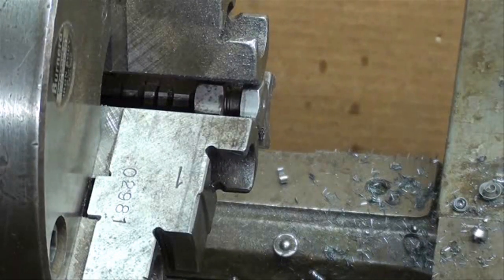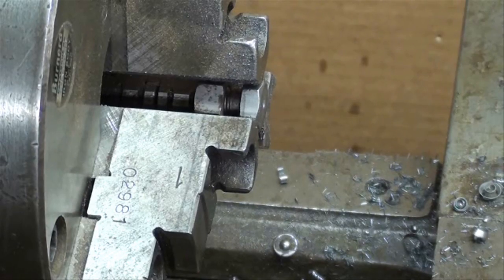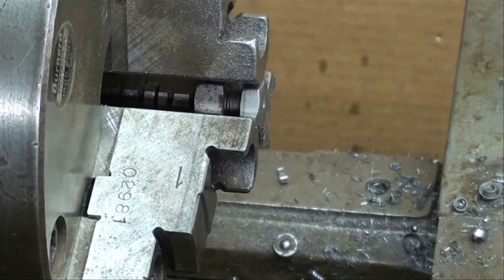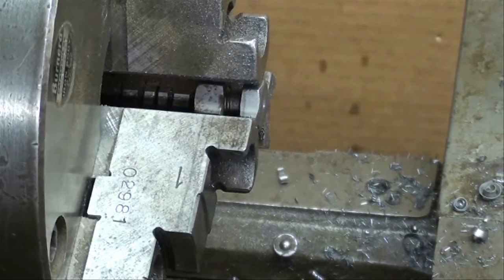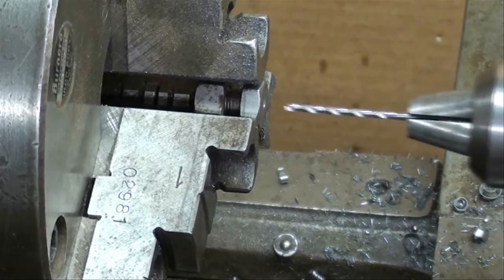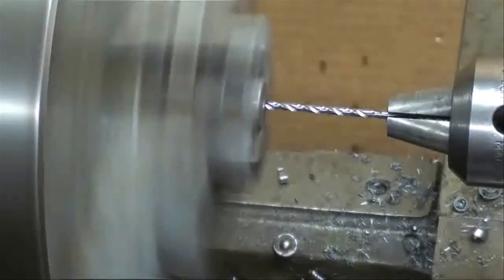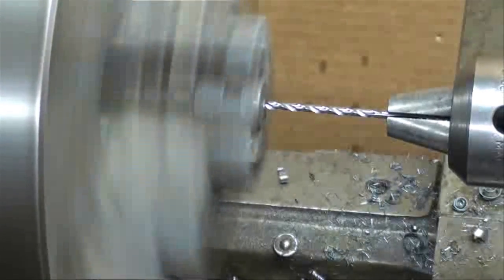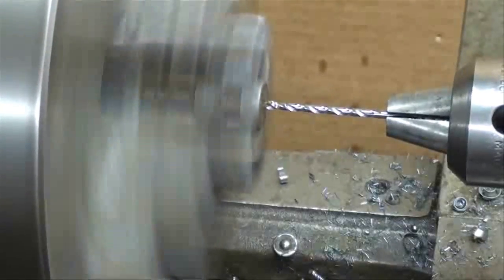We'll put the 3/32nd in. Now when you drill these small holes, small diameter holes, feed it slowly. I guarantee you'll break it off. Back it out often.